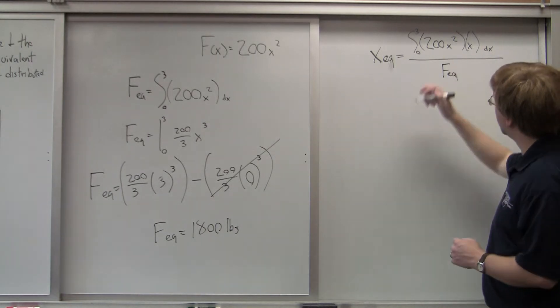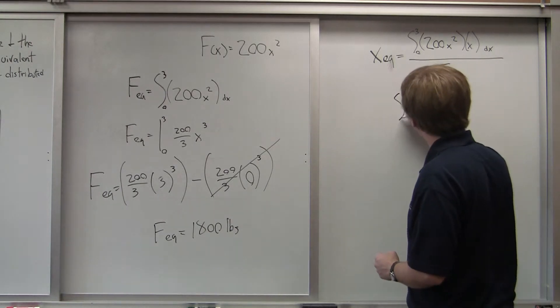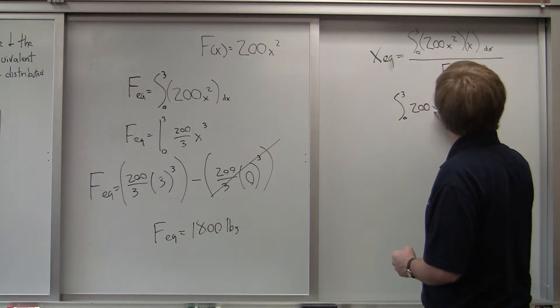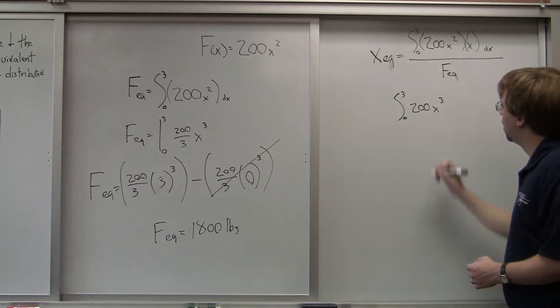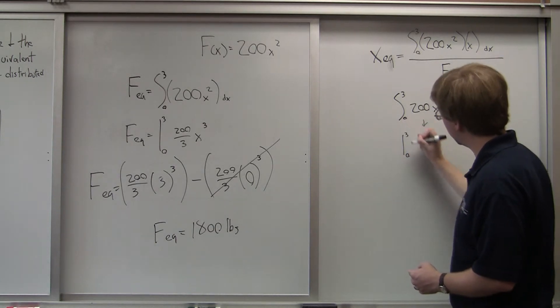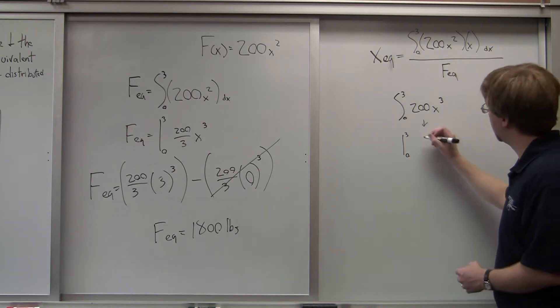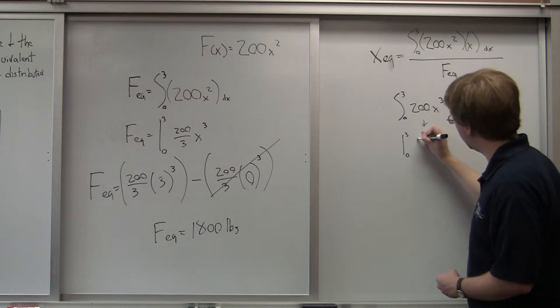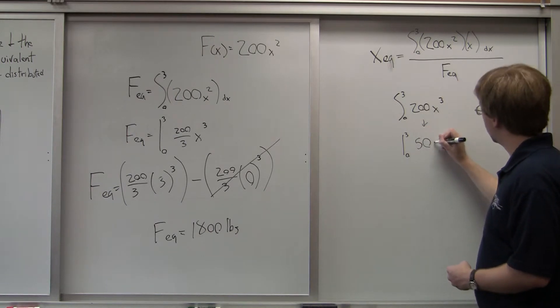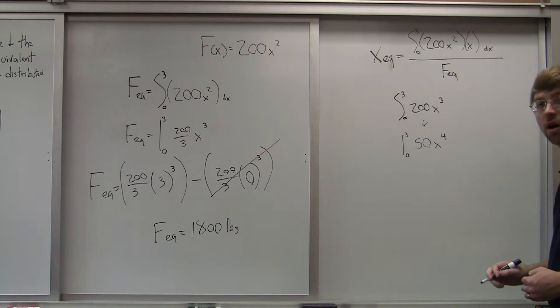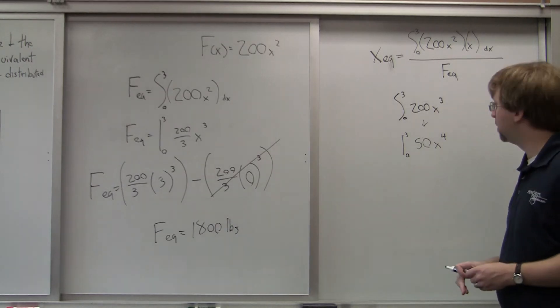Alright, so taking this integral, I'm taking the integral from 0 to 3 of 200 x cubed. And that is going to turn out to be, the evaluated integral is, so 200 over 4 is going to be 50 times x to the 4th. Alright, so I can evaluate this from 0 to 3.